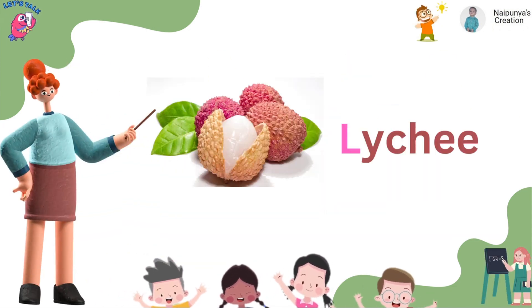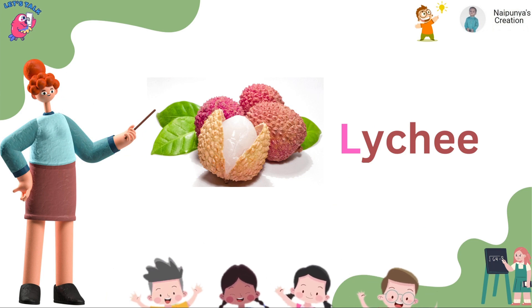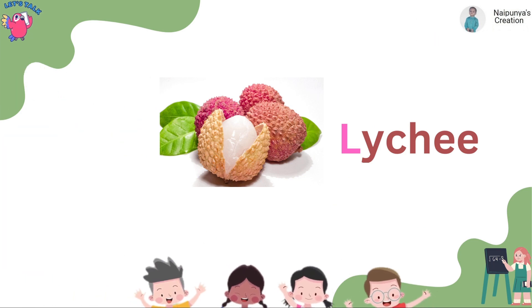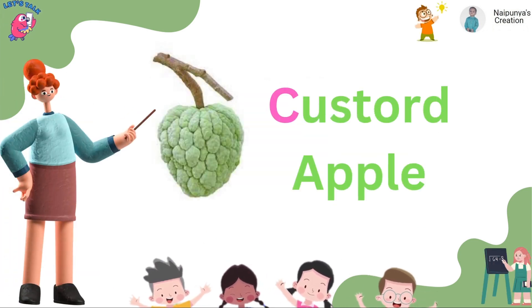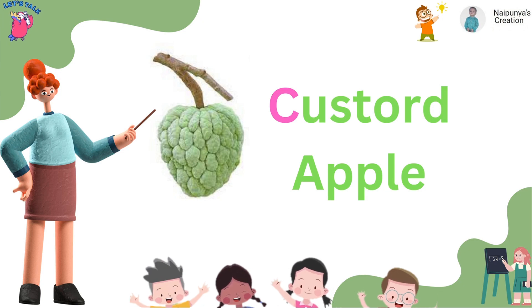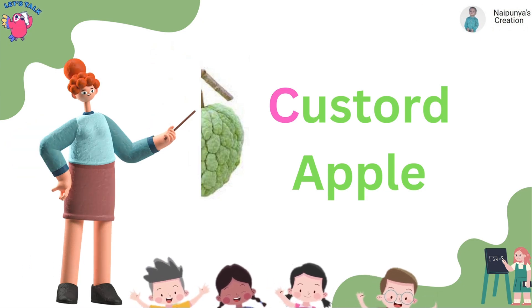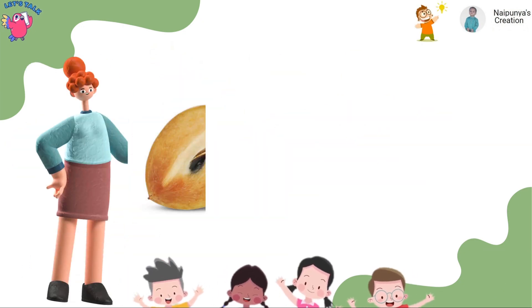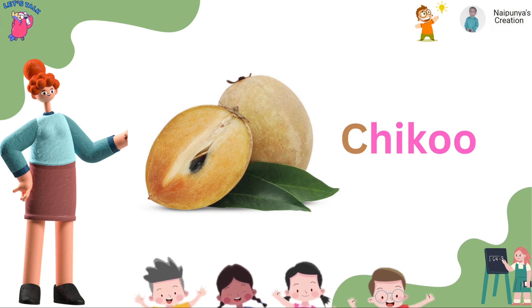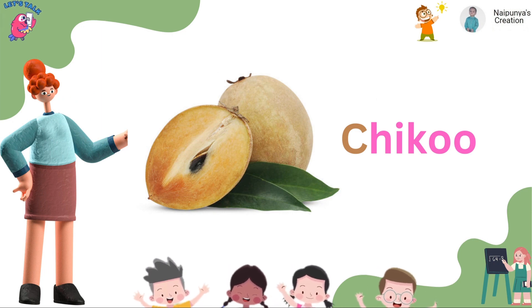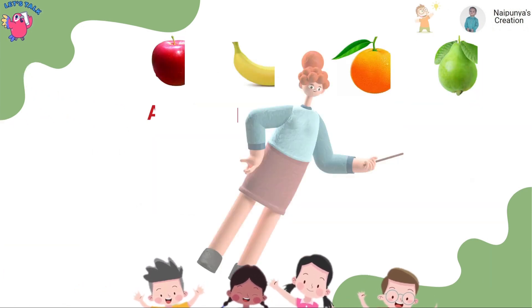This is a lychee. This is a custard apple. This is a chikku. So let's repeat again.